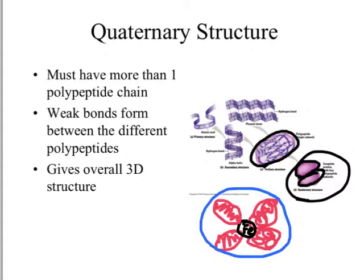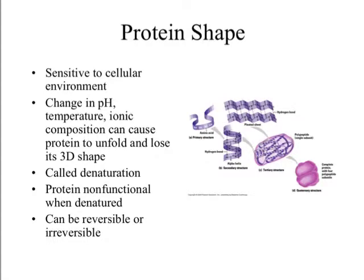Even though proteins are hugely complicated structural macromolecules, they're very sensitive to cellular environments. A change in pH, temperature, or ionic composition of cells can actually unfold and loosen the 3D structure of a protein, causing denaturation. Denaturation is bad because a denatured protein is not functional — any part being loose or unfolded means the protein won't function as it's supposed to. If the unfolding is minor, it can be reversible, but if it's too drastic, it could be irreversible and very dangerous to the living system.